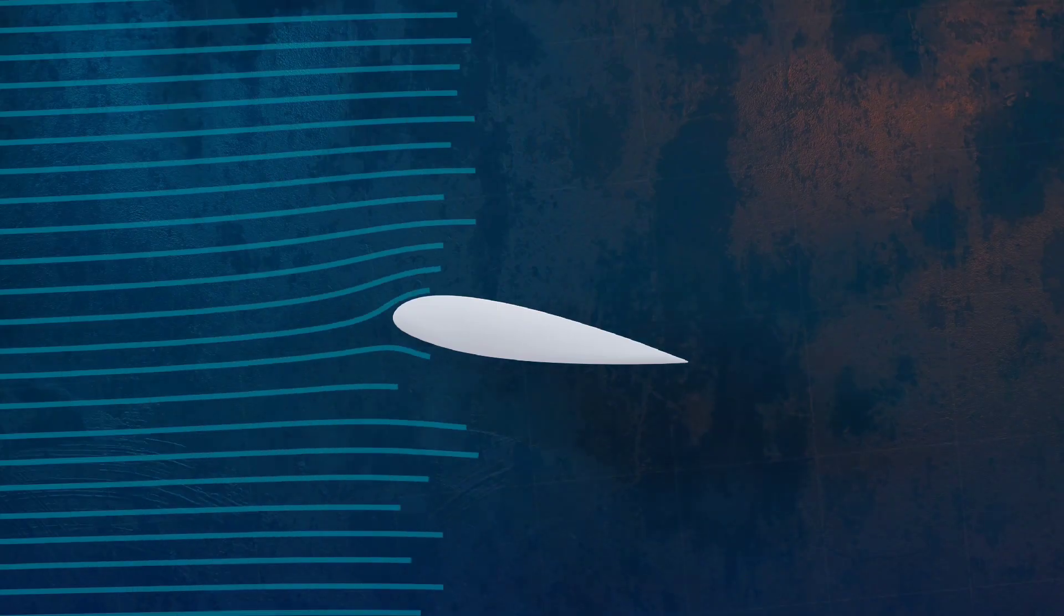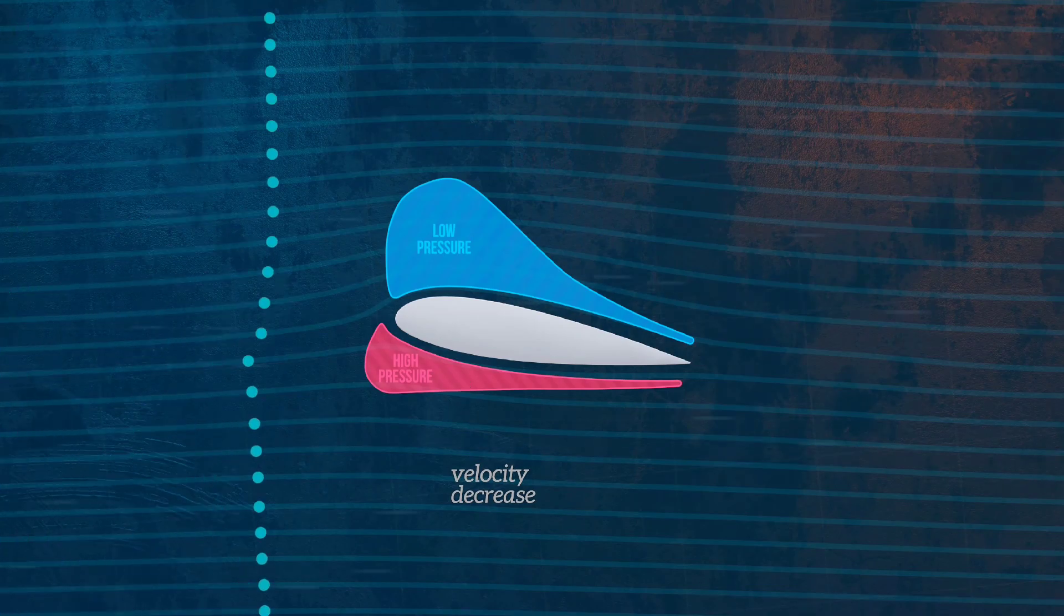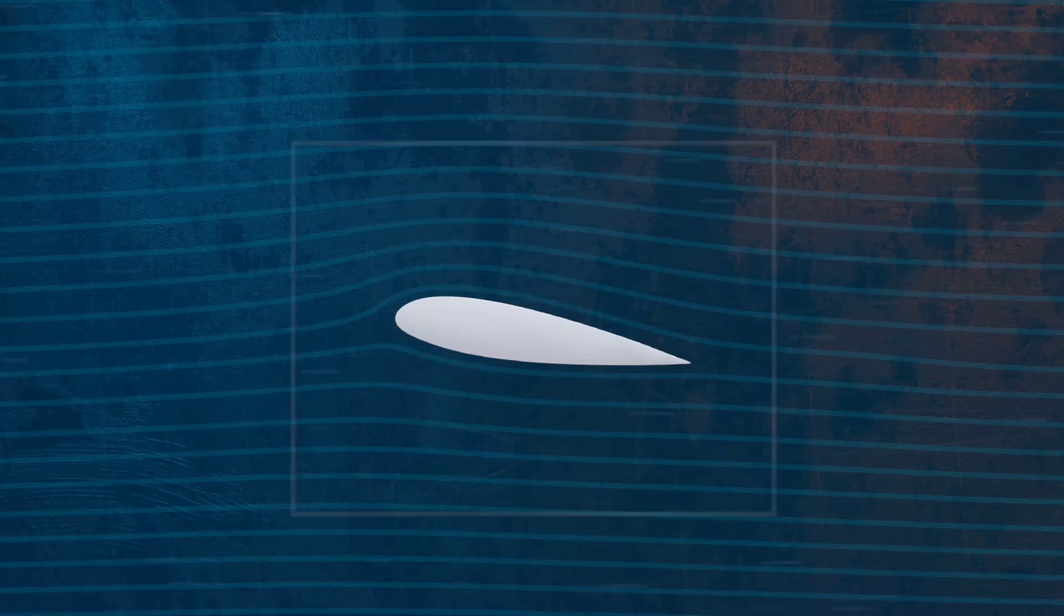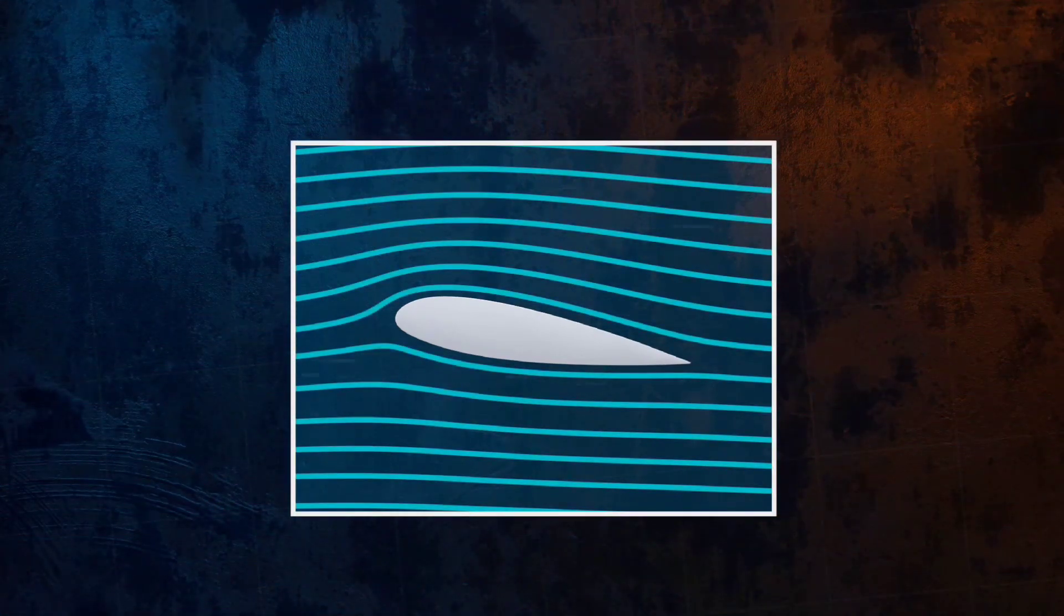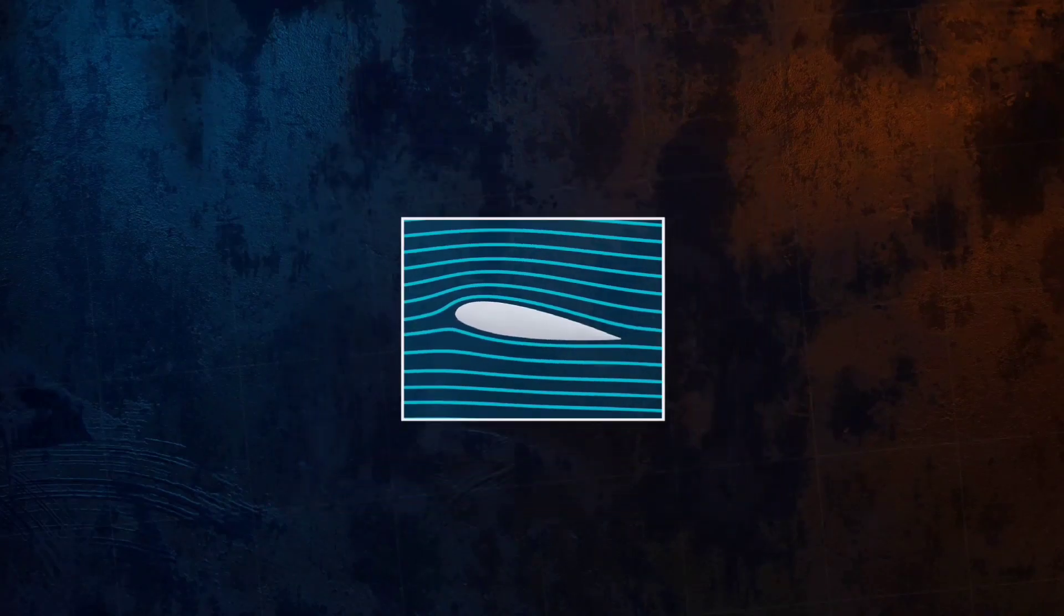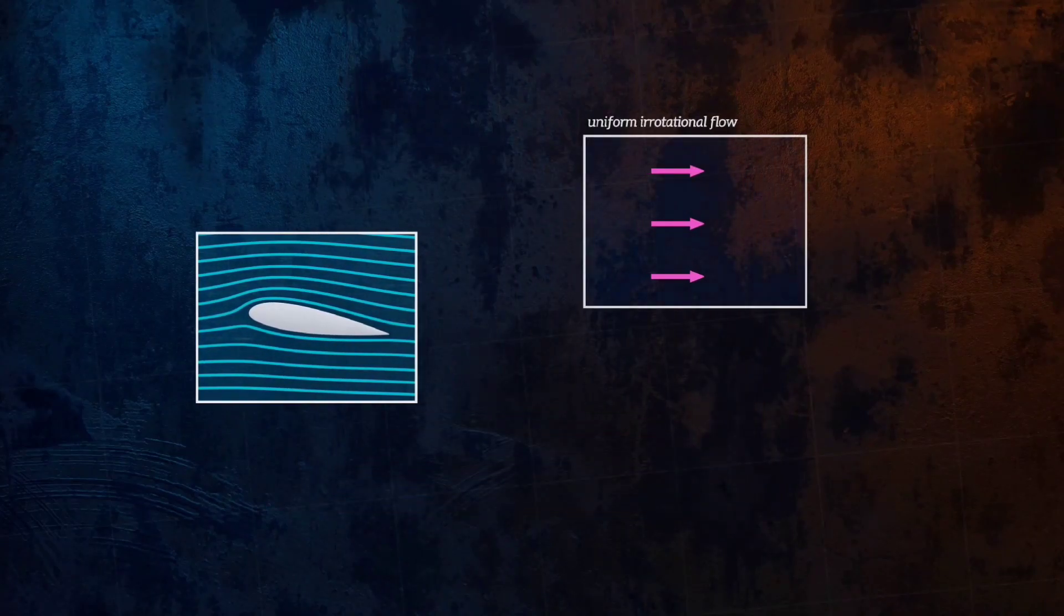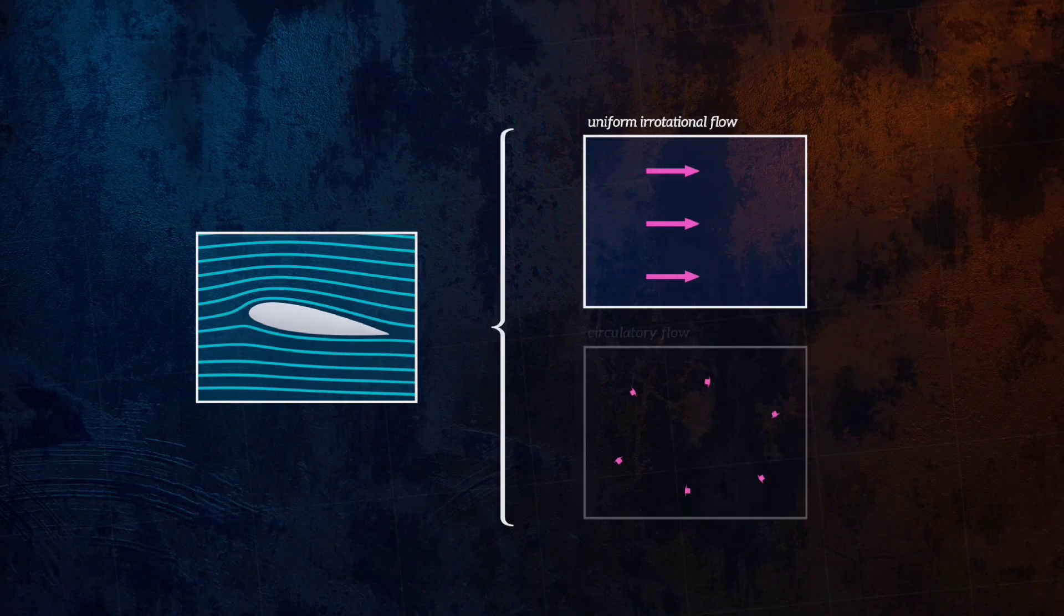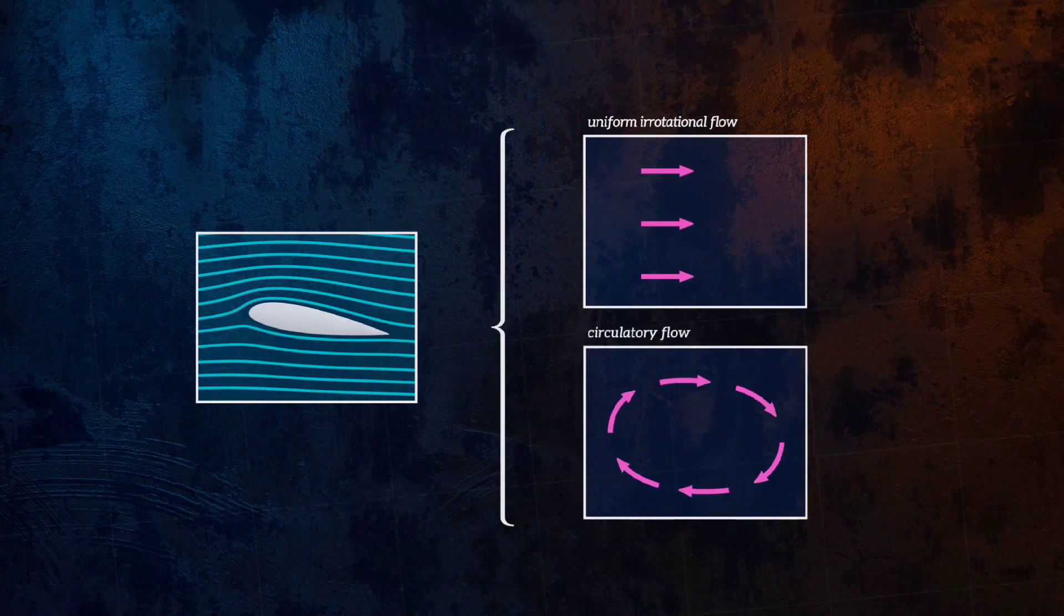When wind flows across the blade, the air pressure on one side of the blade decreases. The difference in air pressure across the two sides of the blade creates both lift and drag. The force of the lift is stronger than the drag and this causes the rotor to spin.